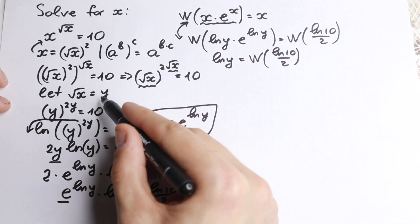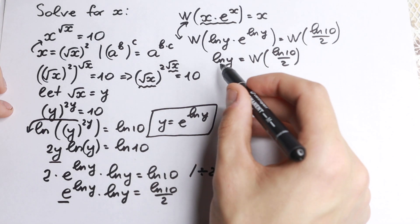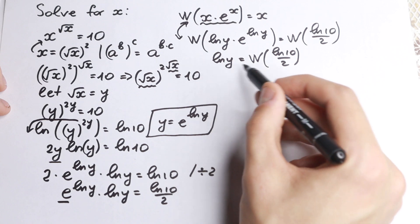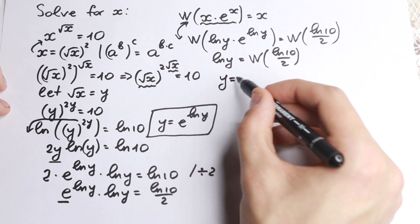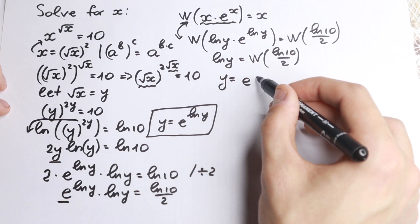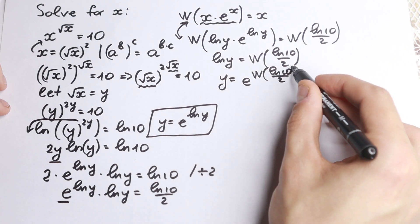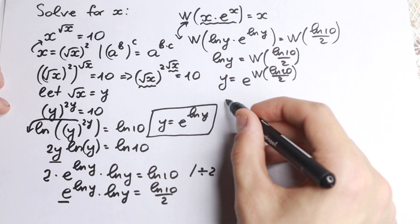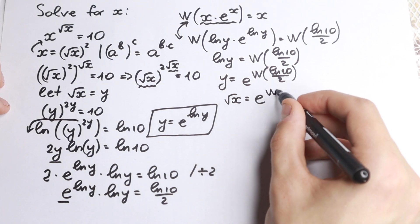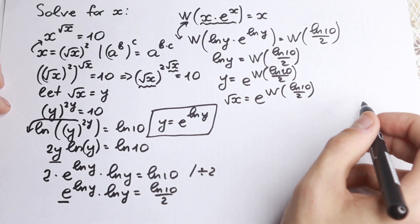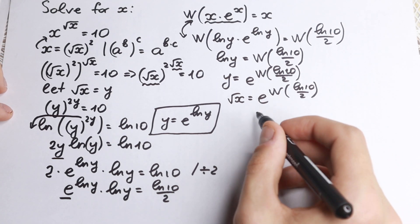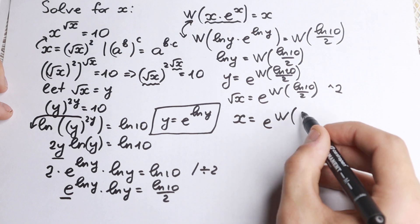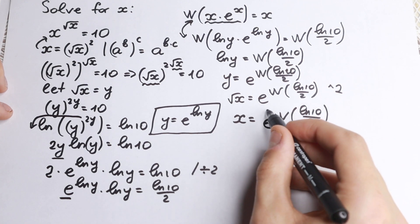Recalling our substitution y equals square root of x, let's first find y from the current equation. Taking e of both sides cancels the natural log on the left, giving y equals e to the power W of natural log 10 over 2. Since y equals square root of x, we have square root of x equal to e to the power W of natural log 10 over 2. Squaring both sides gives x equal to e to the power W of natural log 10 over 2, all raised to the second power.